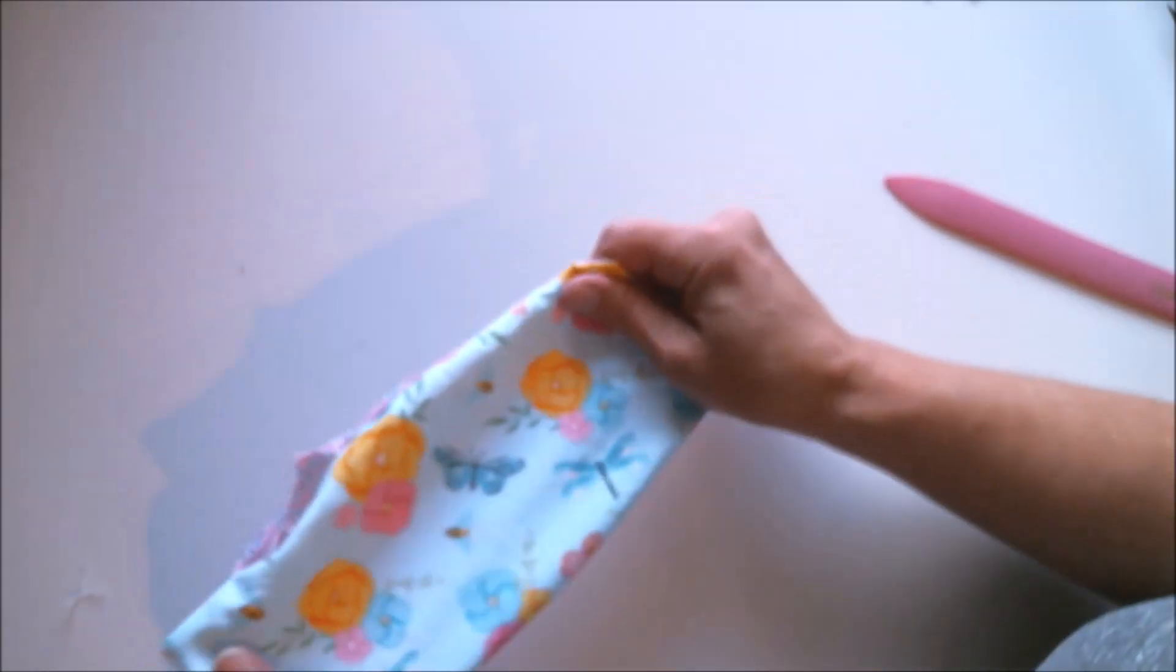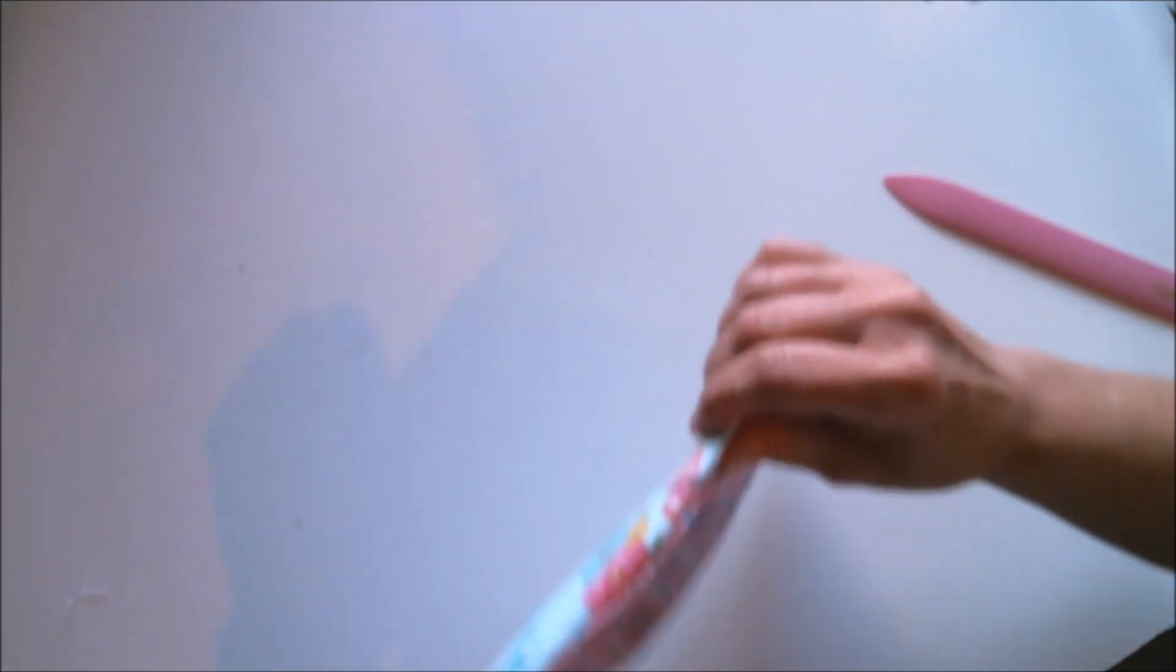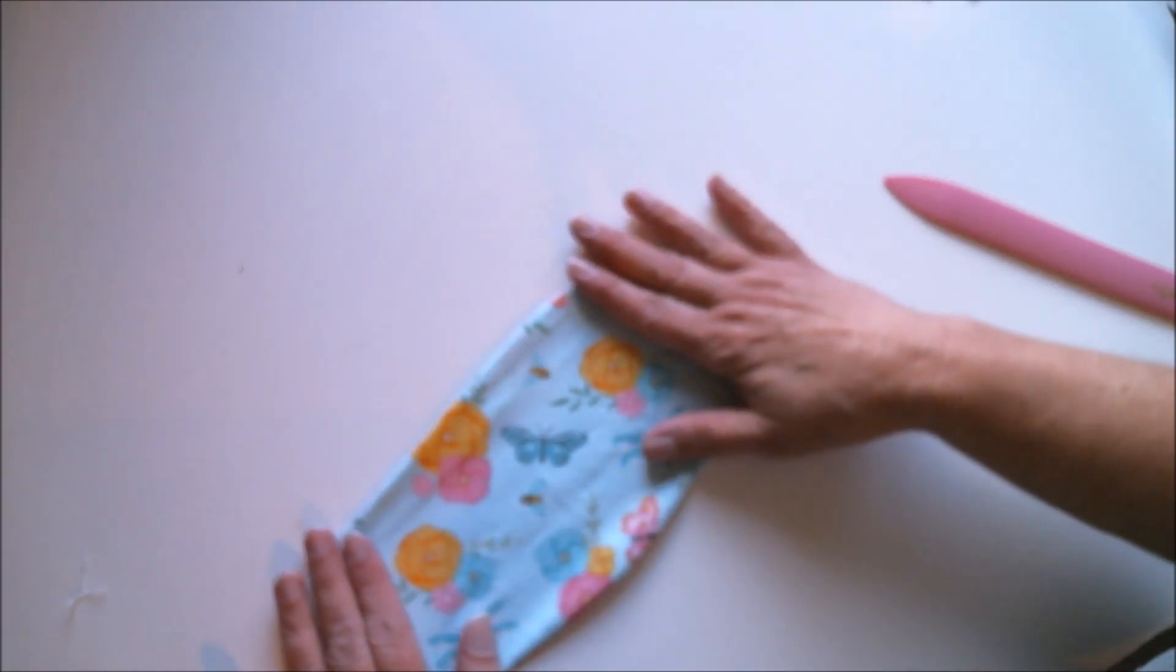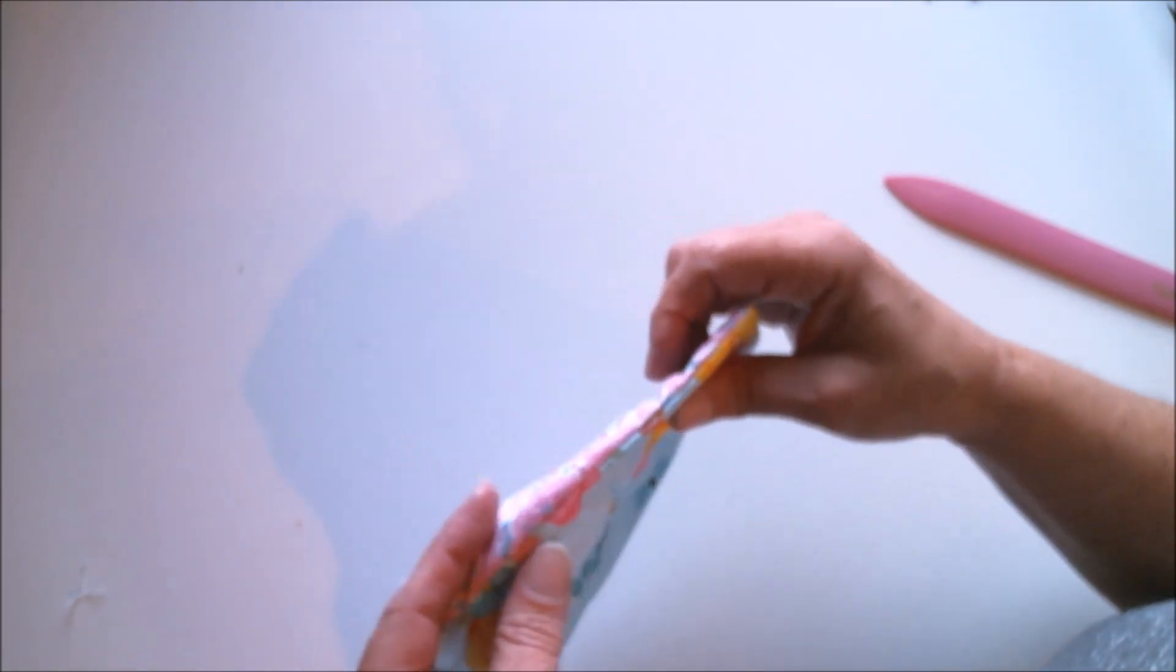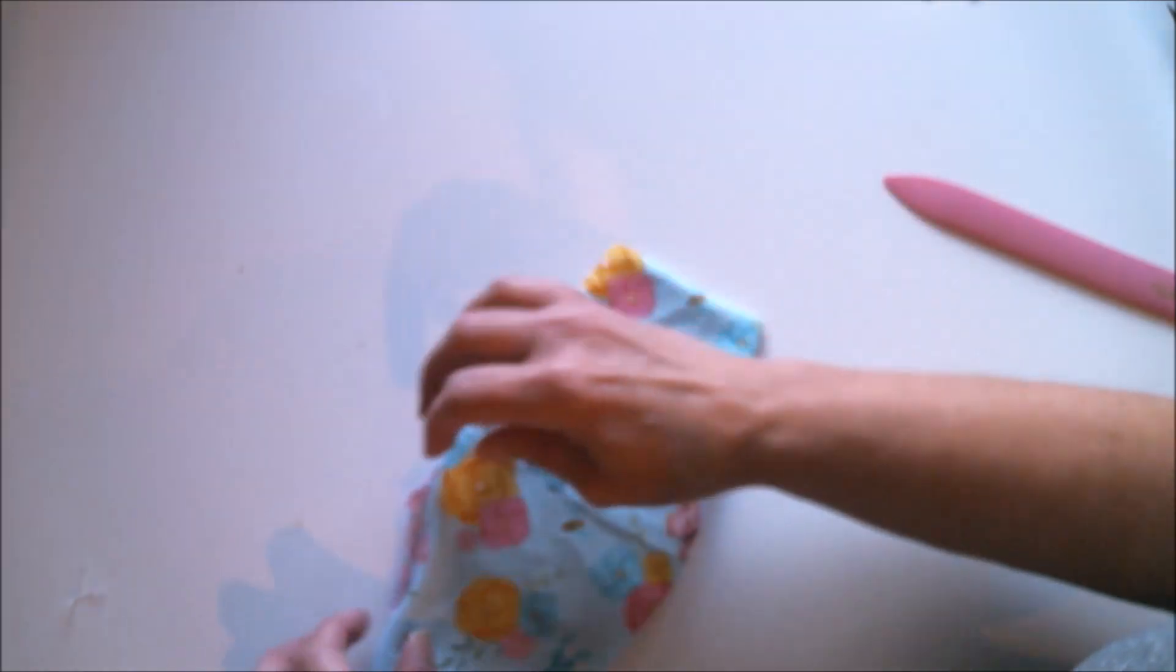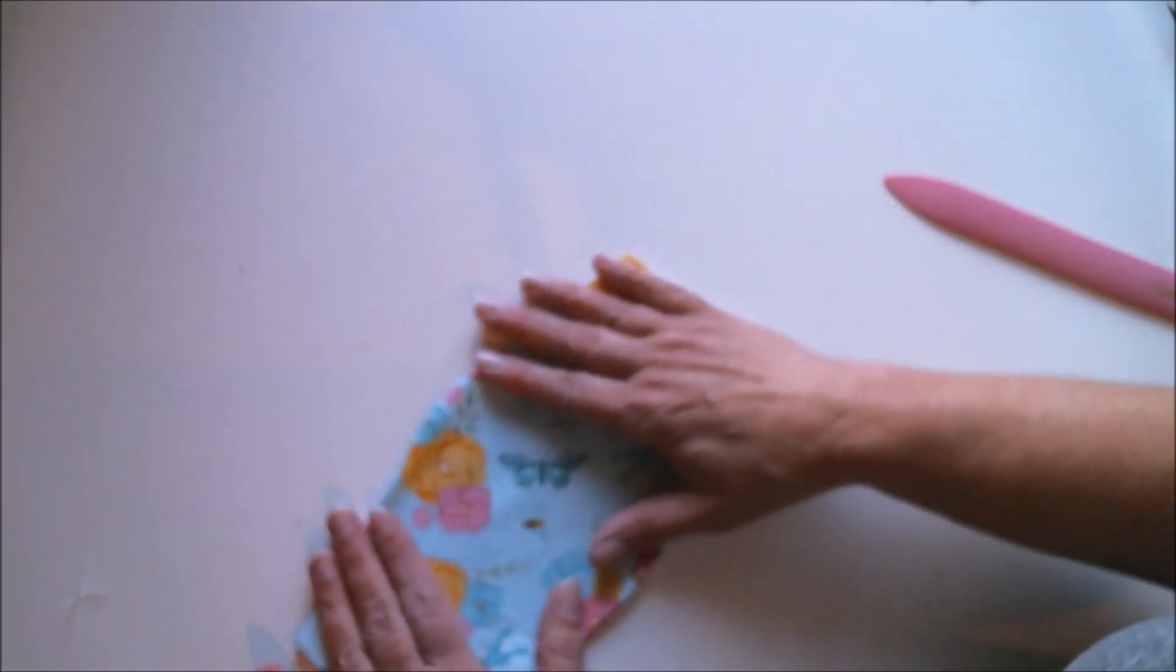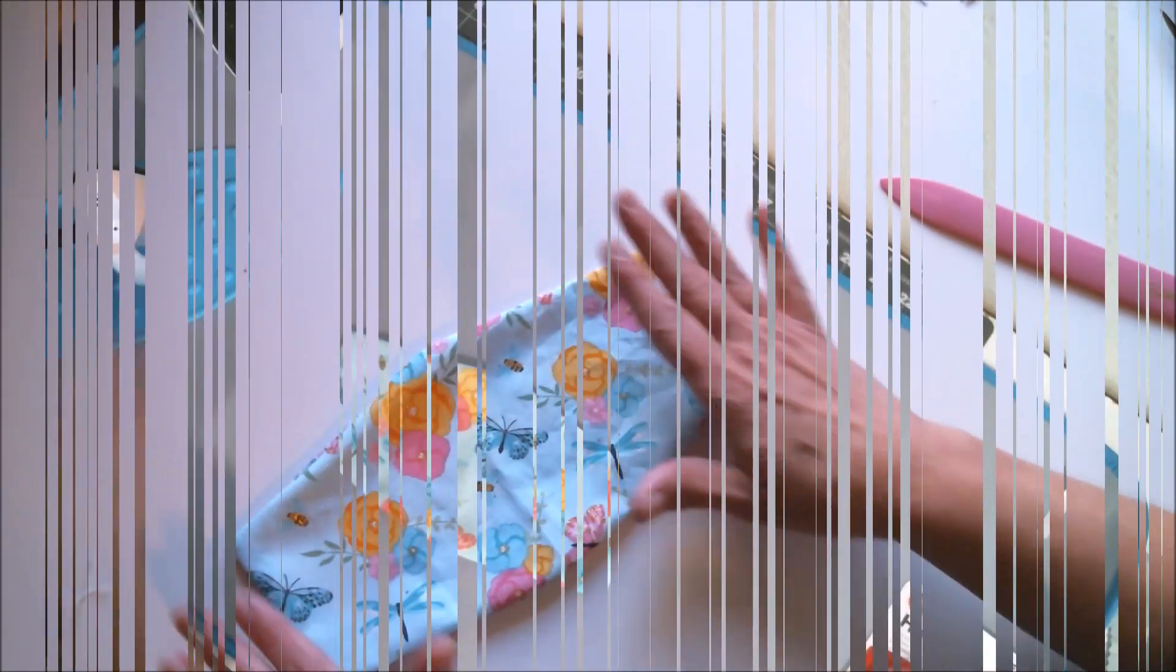Once you're done with that, it's time to smooth everything out, you know get everything laying the way it's supposed to. You'll notice on the opening there that it actually folds in nicely to match up with the seams. As you can see, I had to do a little bit more straightening to get everything to lay out exactly like it's supposed to, so take your time and don't panic if it takes a minute for you to get everything lined up and looking the way that it's supposed to.